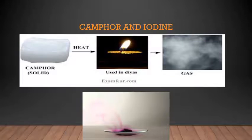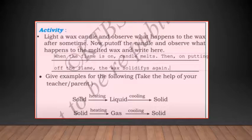Next activity: light a wax candle and observe what happens to the wax after some time. Now put off the candle and observe what happens to the melted wax. When the flame is on, the candle melts. On putting off the flame, the wax solidifies again. This is a very simple experiment. When there is no power in your house, you can do this and see the changes.